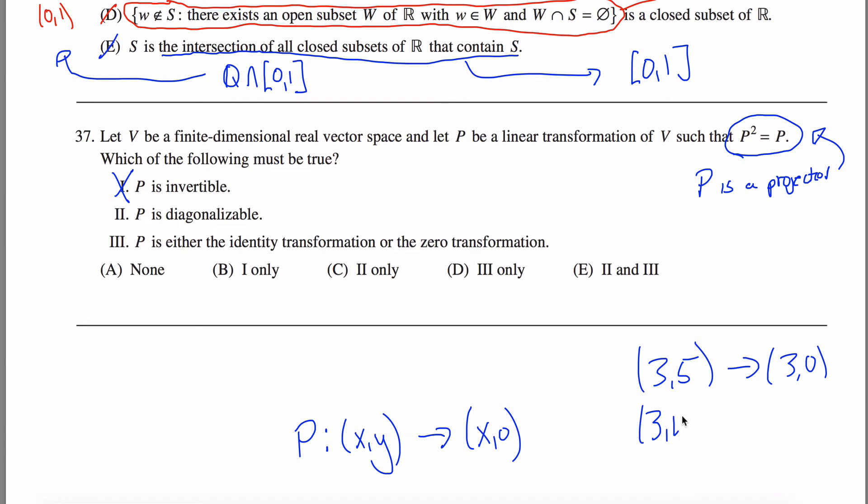(3,4) also gets mapped to (3,0), right? This gets mapped here, this gets mapped here. So when we try to think about the inverse map, where do we take (3,0)? We kind of have to take it here and here. It wouldn't be well-defined. This would not be invertible.